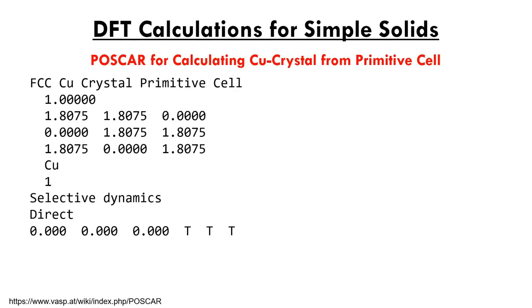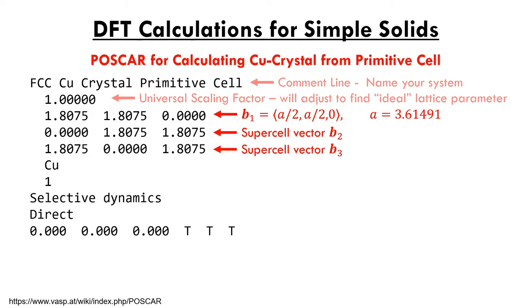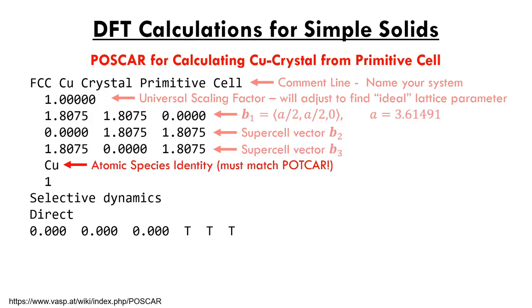A rather straightforward file is the POSCAR. This file contains all the information regarding atom positions and tells VASP the dimensions of your supercell. The first line is a comment — it should clearly describe the system. The second line is the universal scaling factor, used to scale up or down your supercell vectors. The next three lines describe your three supercell vectors, and the sixth line defines the chemical identity of the atoms — each distinct type listed in order, separated by a space.